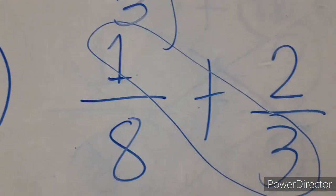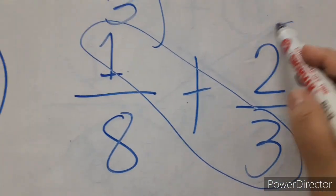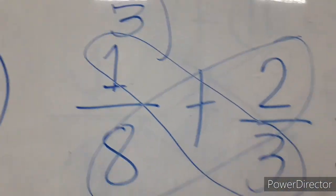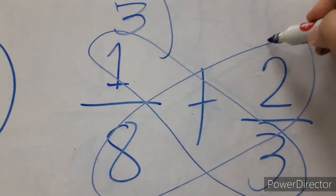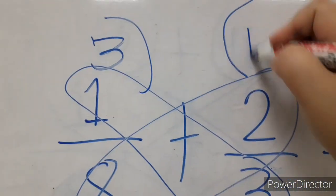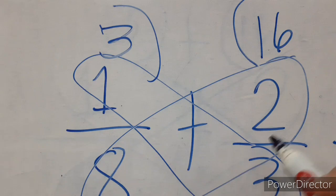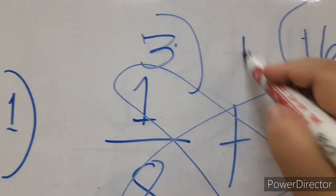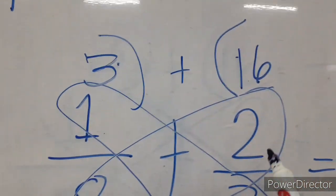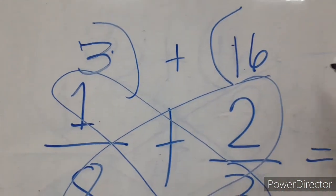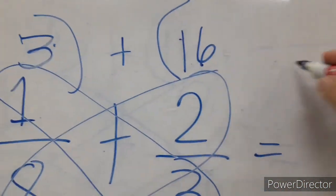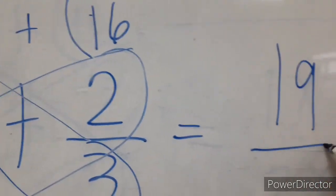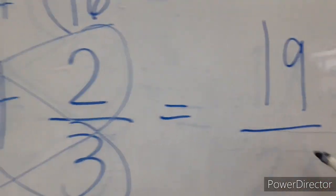Next, 2 times 8 is equal to 16. So we have here 16. Now 3 plus 16 is equal to 19. So our numerator is 19.